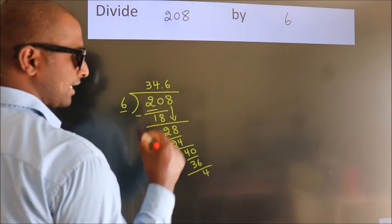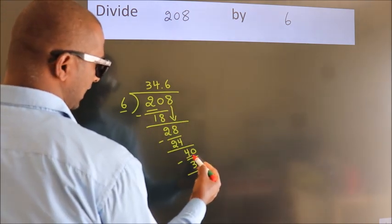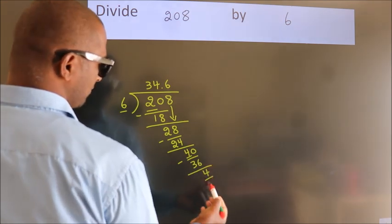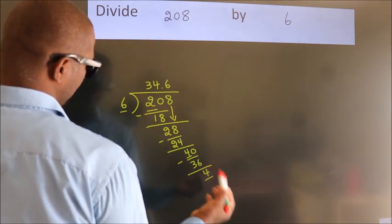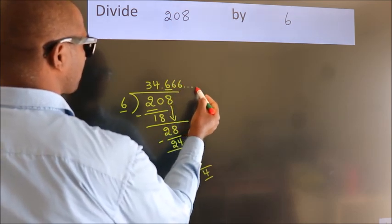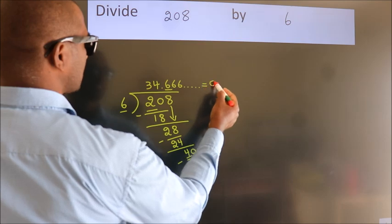Now, observe. We had 4 here and we got 4 again. That means this number keeps on repeating. So, this is our quotient.